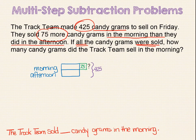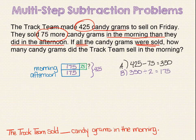Now we are ready to let our model drive the math. Since we know that the total candygrams is 425 and 75 more were sold in the morning, let's subtract 75 from 425 to find out how many candygrams are left to be divided up. 425 minus 75 equals 350. That means these remaining two pieces have to total 350. So if we want to find out how many candygrams are in each piece, we will divide 350 by 2 to find that each remaining piece equals 175 candygrams. We still need to total up the morning bar: 175 plus 75 equals 250. The track team sold 250 candygrams in the morning.